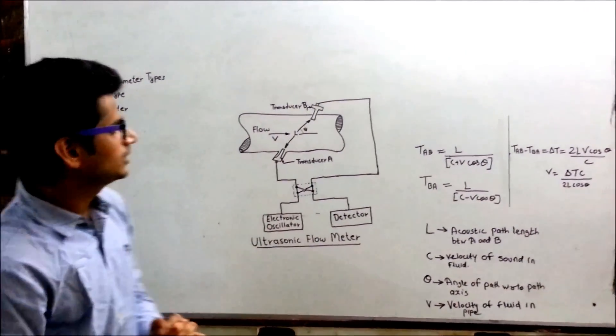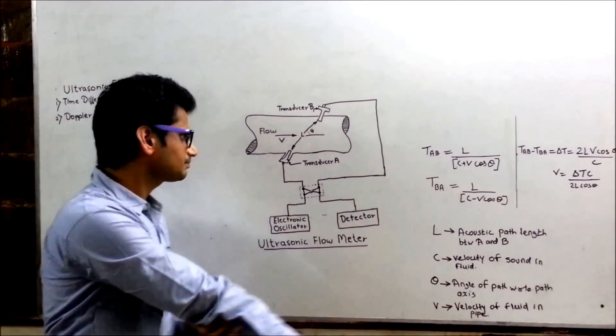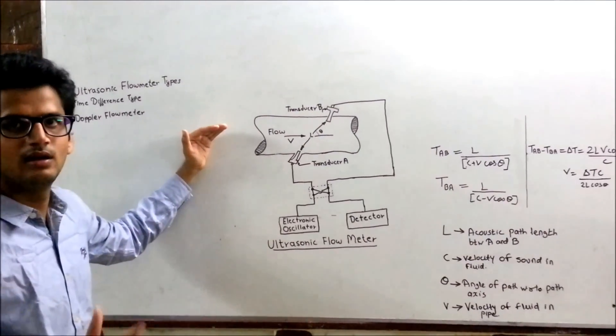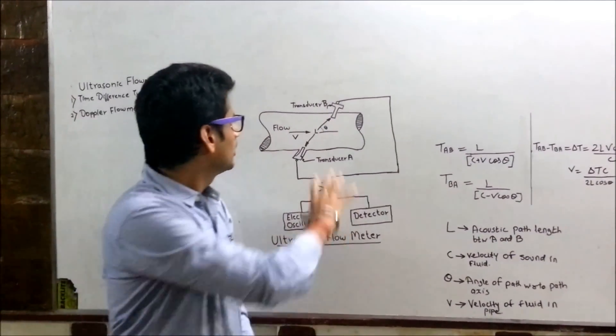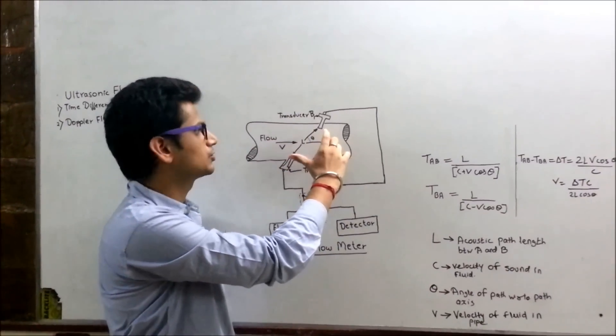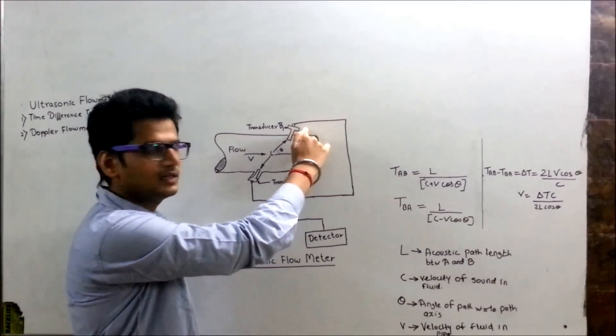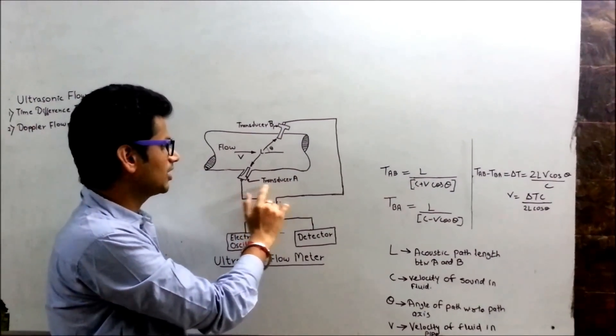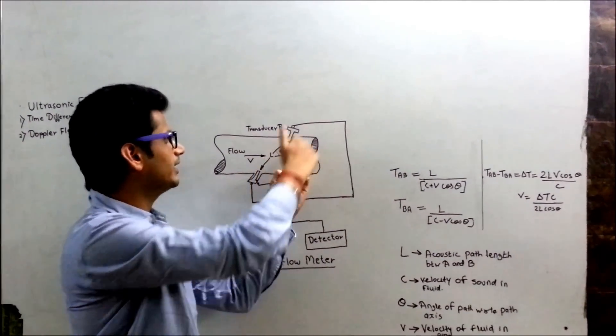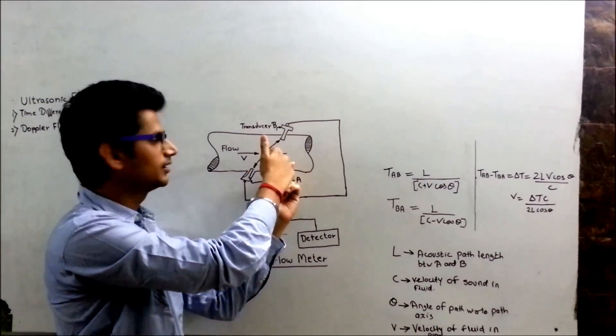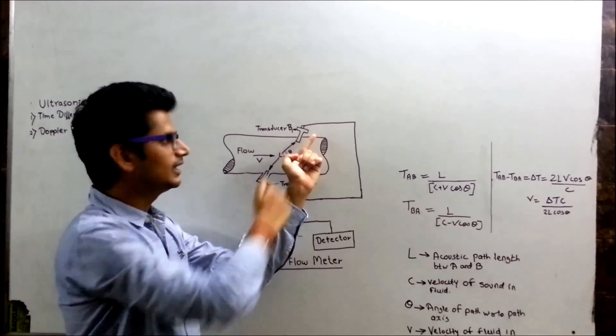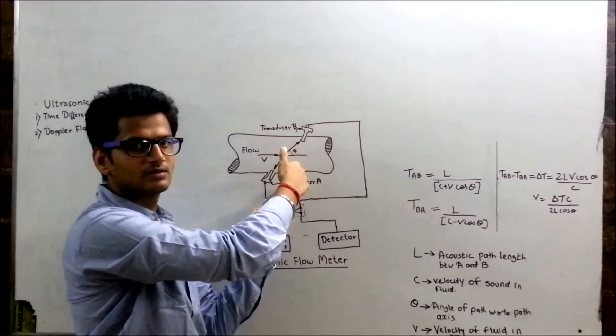Now, I will explain the working, how it exactly works. The fluid will pass from the pipe. The fluid may be gaseous, liquid, anything. There are two transducers installed over here, one at the upper side and one at the lower side. This is transducer A and transducer B. Both the transducers will transmit and receive the signal vice versa. Once transducer A transmits the signal, B will receive. Then B will transmit the signal and A will receive.